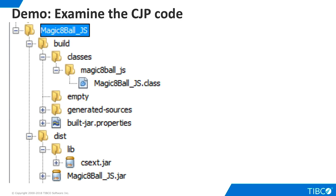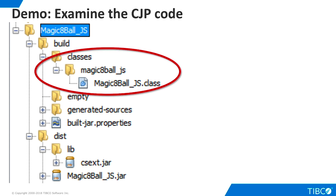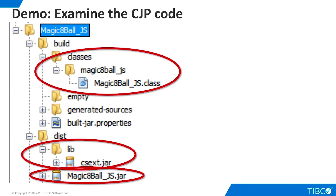Now we are ready to begin our demo. Let's begin by examining the structure of the Java code that makes up the CJP. In this example, we use the NetBeans IDE to develop our code. Our development process involves creation of a Java class which uses a library supplied by TDV. The final product is a JAR file that we can import into TDV.